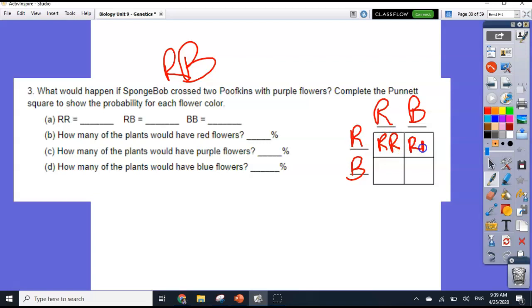So we're going to fill in our Punnett square. So R, R, R, B, R, B, B, B. So how many big R, big R's do we have out of four? We have one. How many R, B's do we have? We have two. How many big B, big B's do we have? We have one.